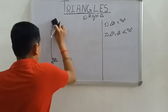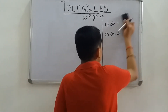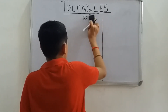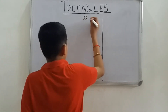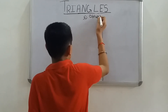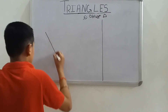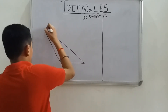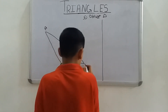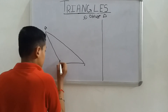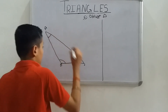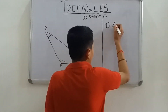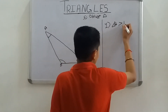Now let's talk about the obtuse angle triangle. The triangle has points A, B, and C. Angle B is more than 90 degrees, while angle A and angle C are less than 90 degrees. First property: angle B is greater than 90 degrees.